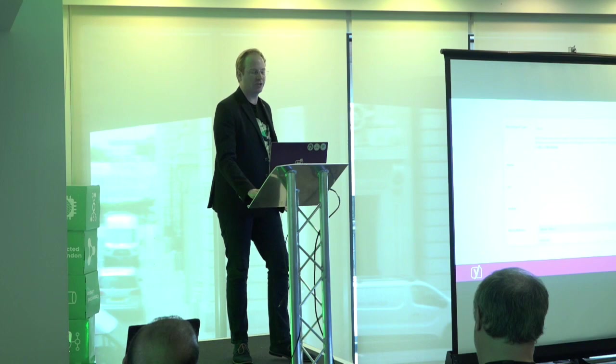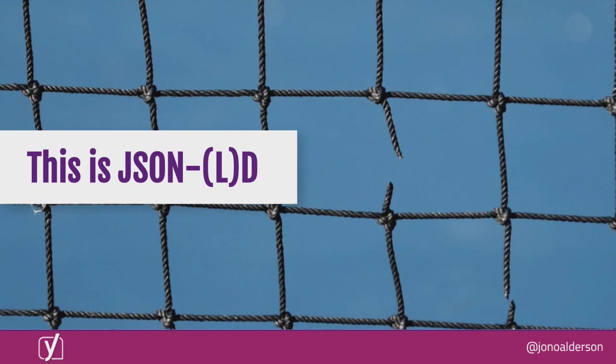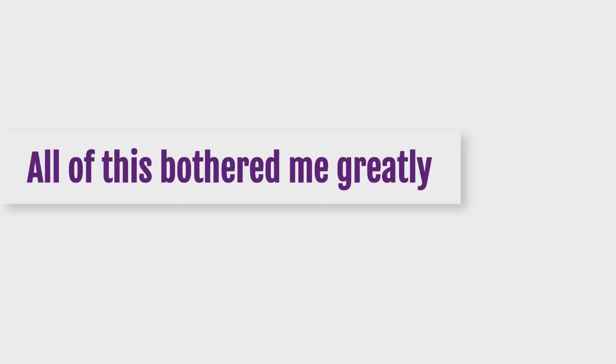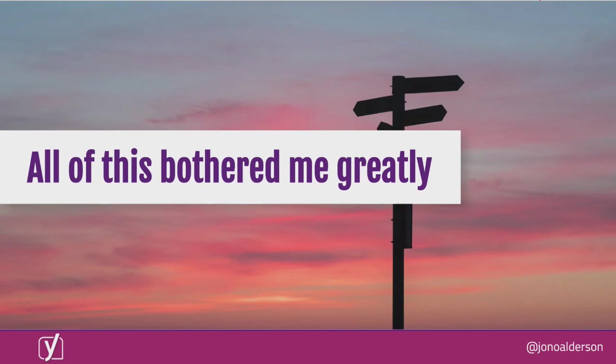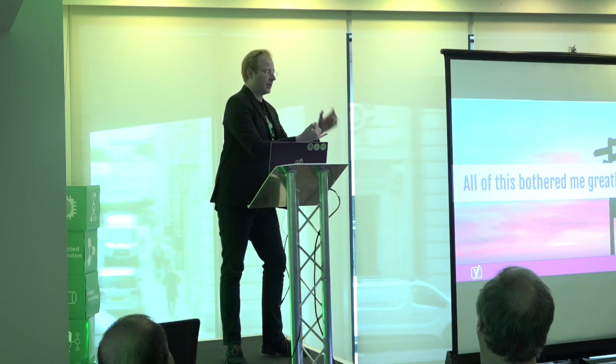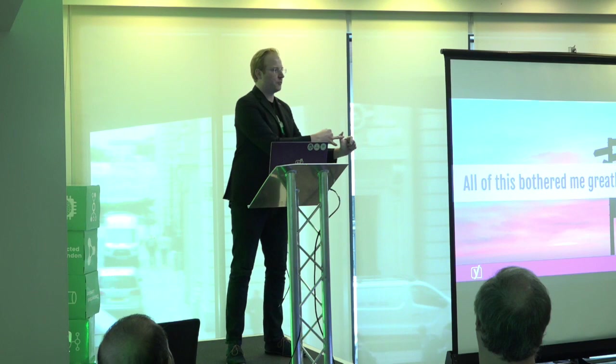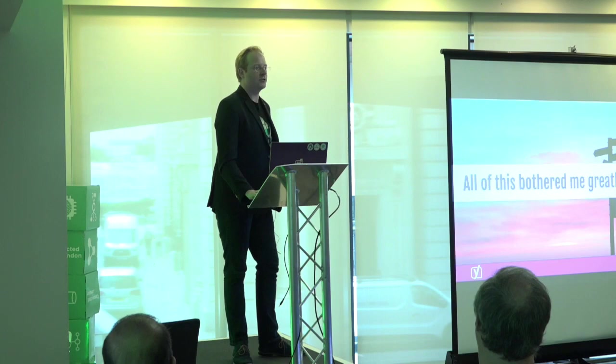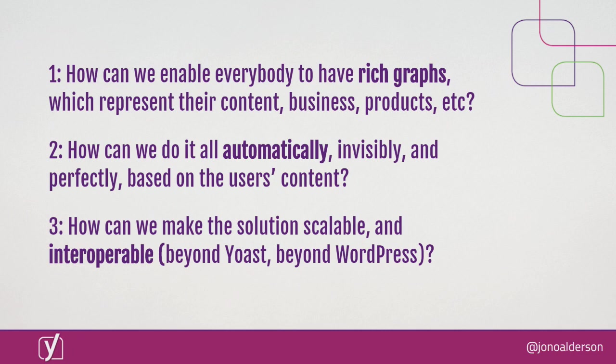Manually authoring and maintaining large complex interrelated graphs at scale just isn't feasible. The approach of picking what a page is about and filling in fields manually doesn't scale. This bothered me greatly. You essentially have a problem where technology isn't smart enough, users can't be trusted to manage what their stuff is about, and businesses can't conceptualize how they'd even go about doing this.